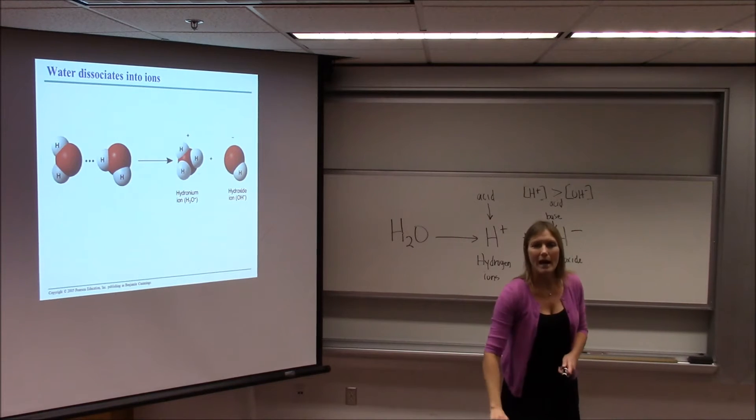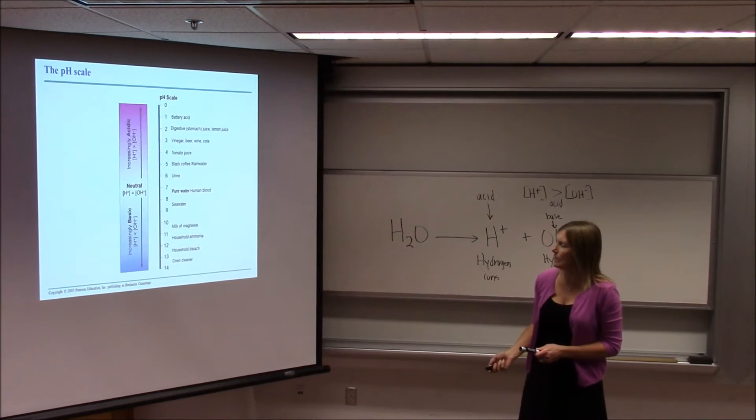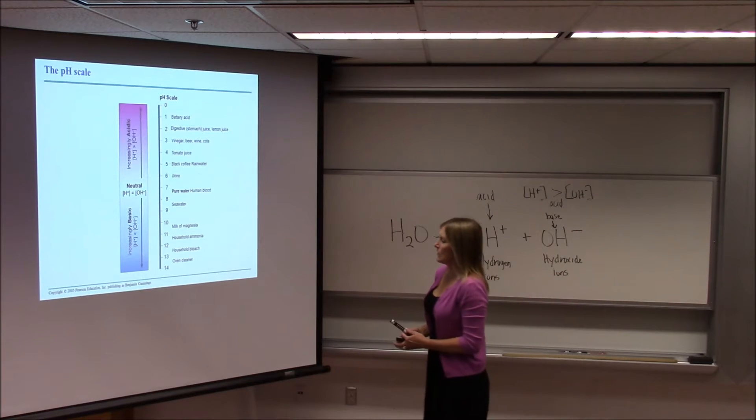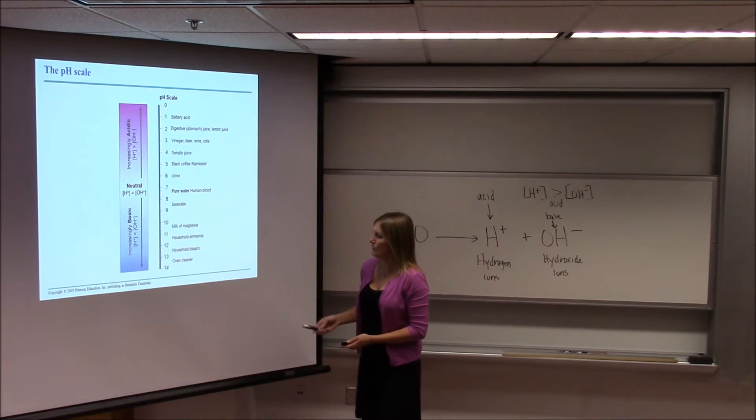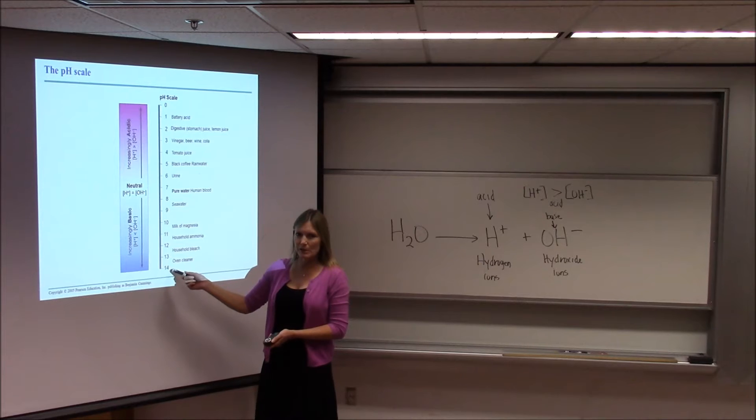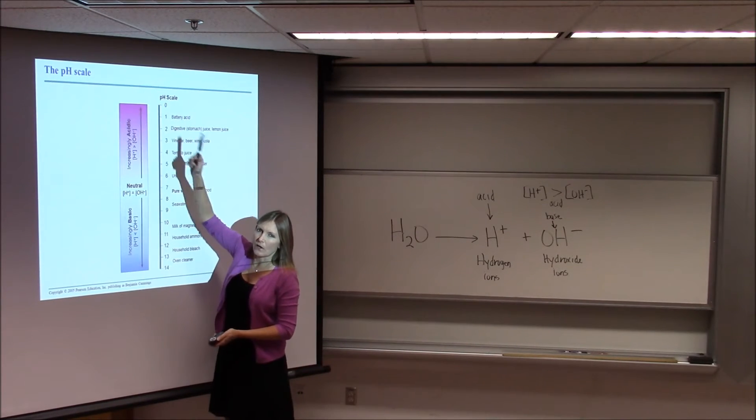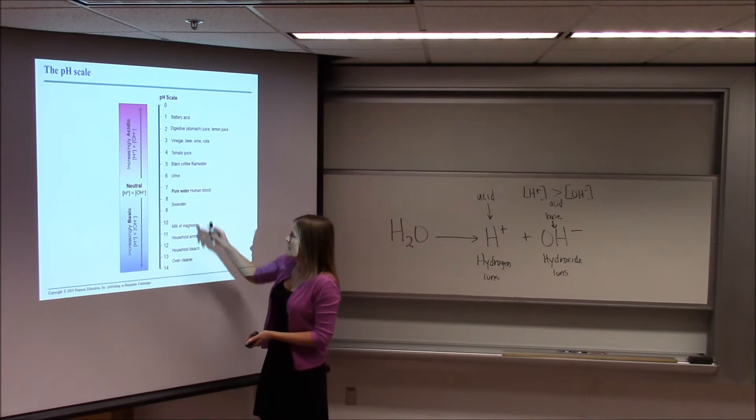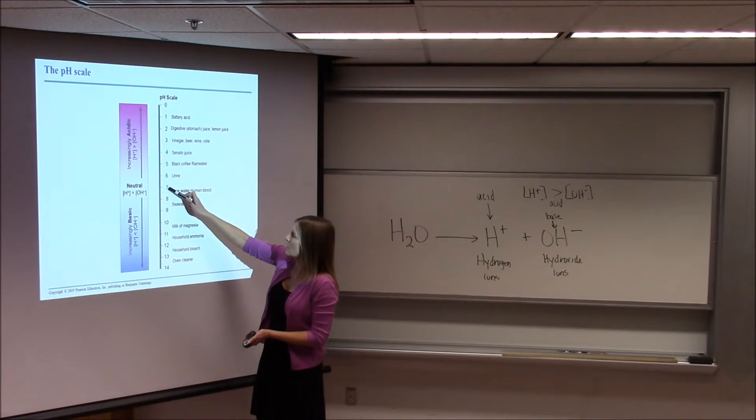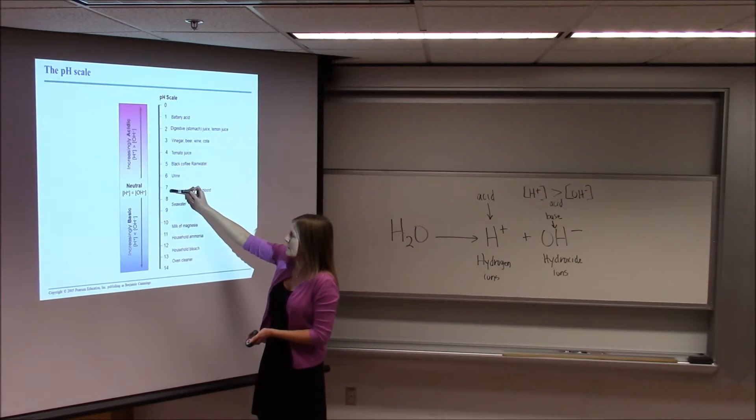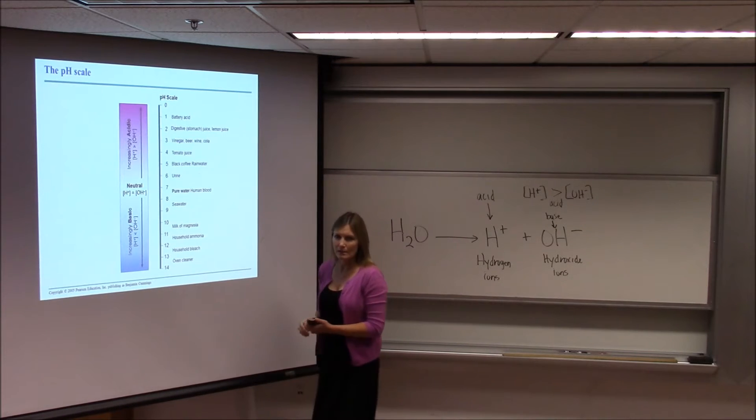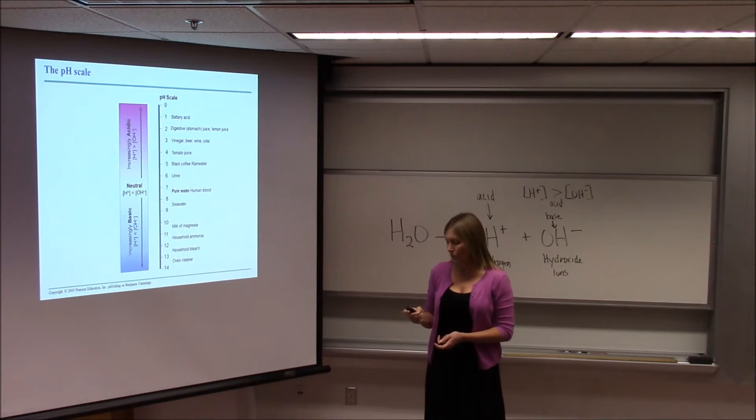And this is the basis for acid-base chemistry. We looked at the pH scale, which goes from 0 to 14. So 14 is going to be a very strong base, 1 is going to be a very strong acid. Remember that anything below pH 7 is an acid, anything above pH 7 is considered a base. pH 7 is considered neutral.